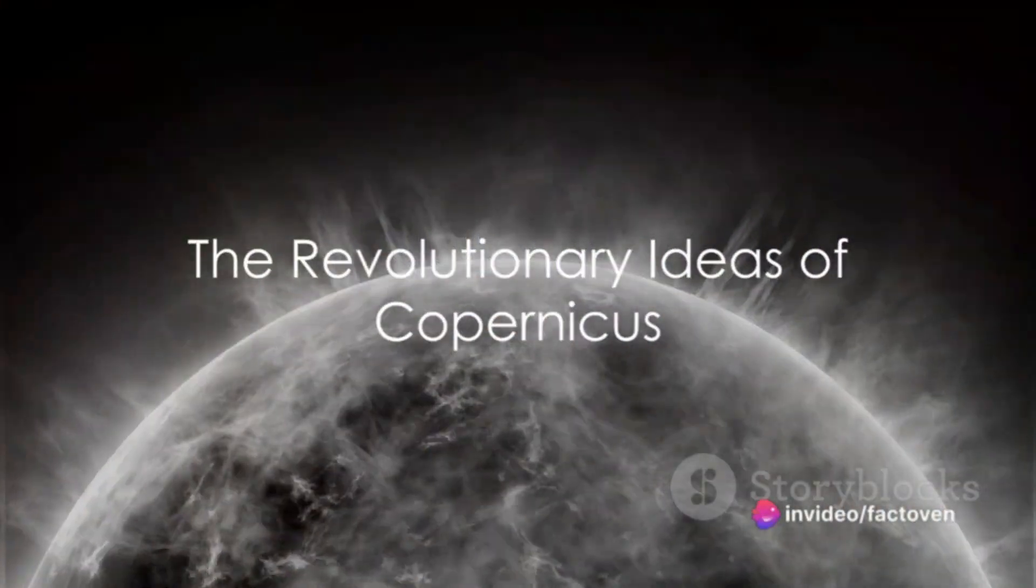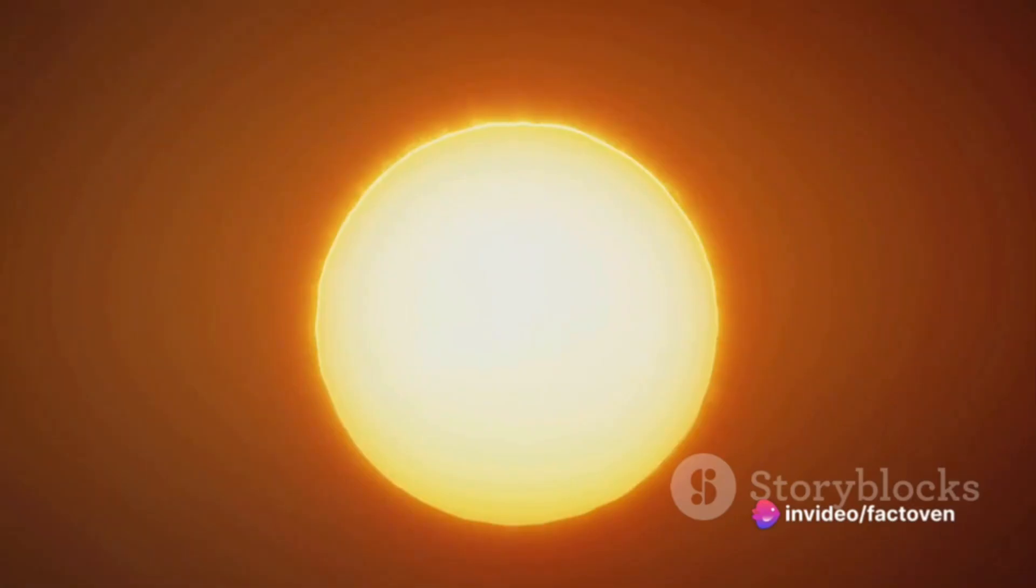What if the Sun orbited the Earth instead of the other way around? A question that seems simple at first, but in reality, it's a radical departure from our well-established understanding of the solar system.